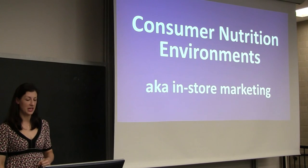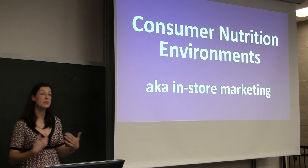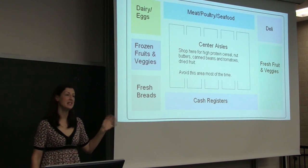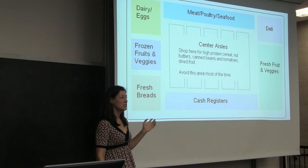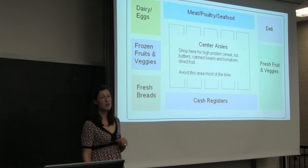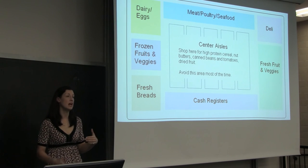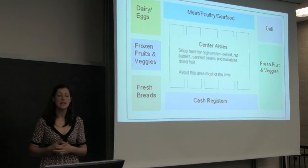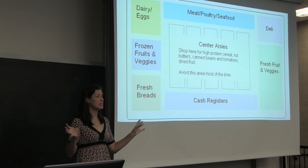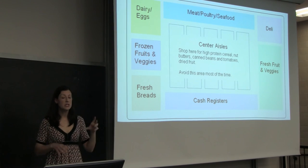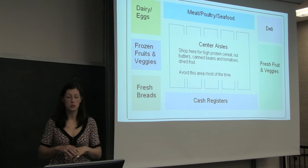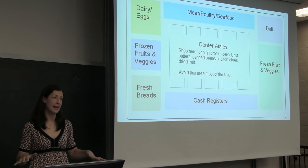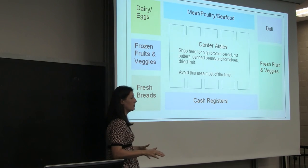Consumer nutrition environments — also known as in-store marketing — is what's being marketed to you once you arrive at your food outlet. This is a map of a typical grocery store layout. Often, public health units have a dietician who can take you on a grocery store tour. They'll typically say: stick to the perimeter of the grocery store because that's where most of the healthy food is. Only go down the center aisles for specific healthy things like high-protein cereal, nut butters, canned beans, and dried fruit.